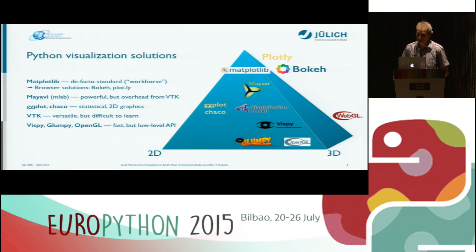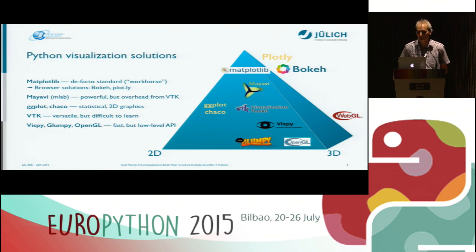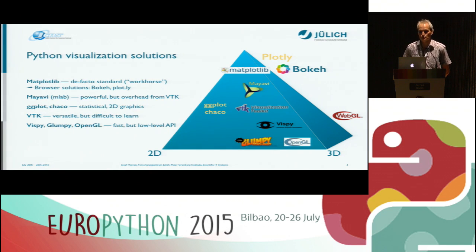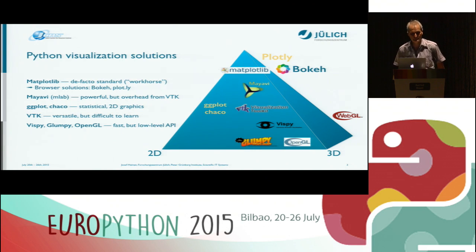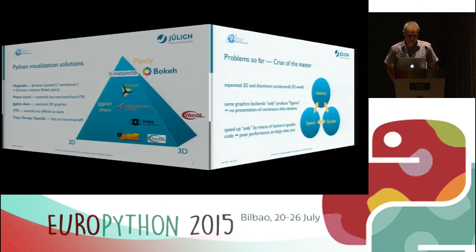The most popular ones are mentioned on this slide. I think the basic workhorse, which is also part of the scientific Python stack, is Matplotlib. It has some solutions where you can use Matplotlib output in the browser. Maybe you heard this morning about Bokeh or Plotly, which are browser solutions that redirect Matplotlib output to a browser window. There are even other tools that make 3D graphics — very powerful ones like MayaVI, VTK, or VisPy — and they are very fast, but the problem is they are low-level.